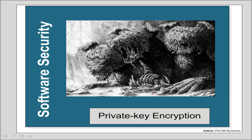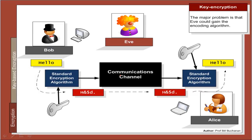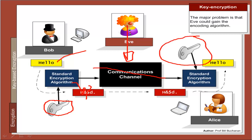With private key encryption we use a secret key to both encrypt and decrypt. Bob takes the secret key, encrypts his plaintext into ciphertext, and sends it over the channel. Hopefully Eve doesn't have that key, and Alice has received the same secret key so she can decrypt it. We use the same standard algorithm on either side, which is known to Eve, but Eve cannot crack the code as she cannot get the shared key.